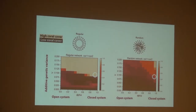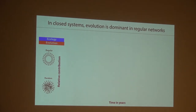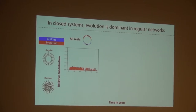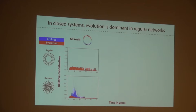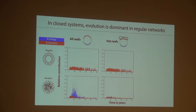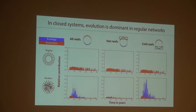For cold reefs, both regular and random networks have a similar signature, but in the regular network it's very strong for the first couple hundred years, whereas in the random network it persists a bit longer through time. Now for the closed system with the same genetic variance — in the regular network only evolution is occurring, whereas in the random network there's a very strong contribution of ecology or competition. The hot reefs look the same in the regular network, and in the random network there's a relatively low contribution from each. The cold reefs show an even stronger competition component in the random network.